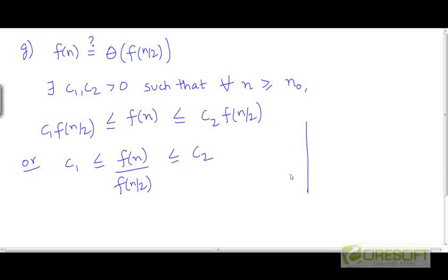So let's say this is the number line. If c₁ is somewhere over here and c₂ is somewhere over here, then the ratio of f(n) and f(n/2) must always remain in this range. It should never cross this range on either side.